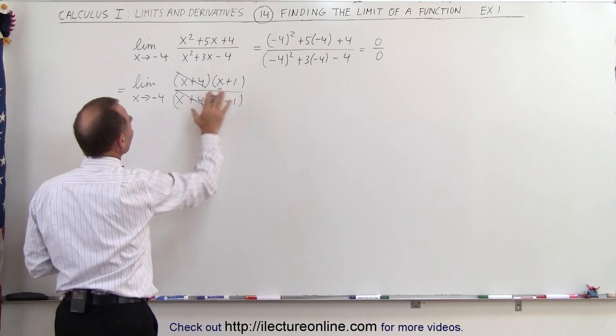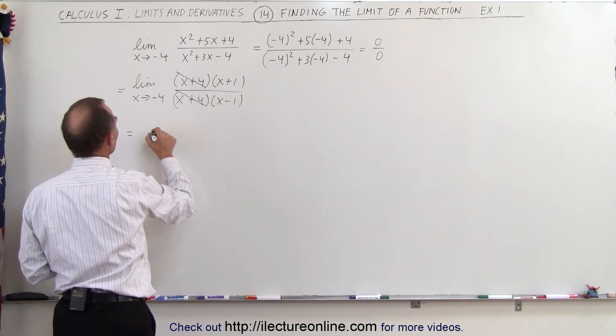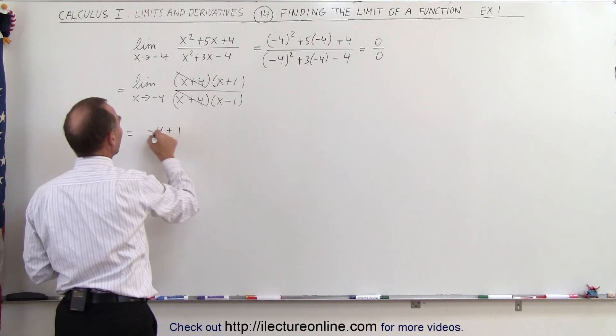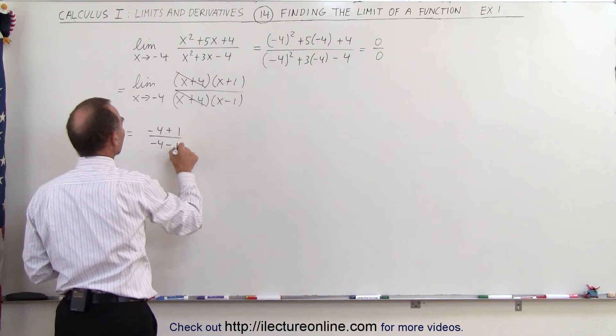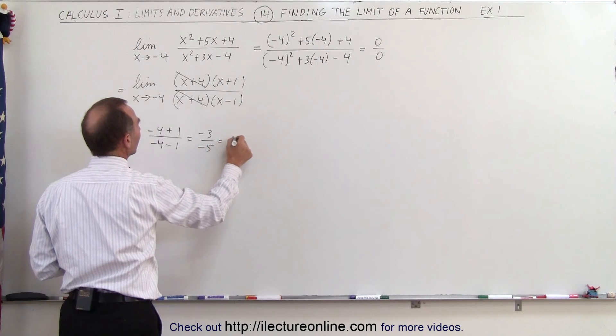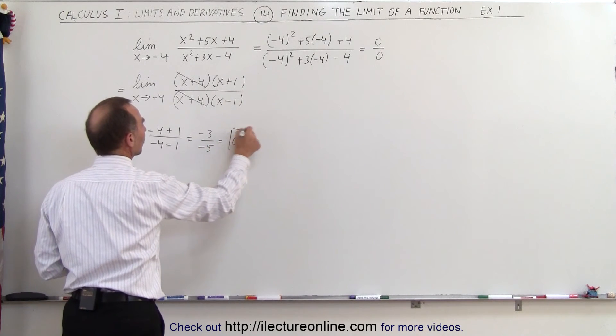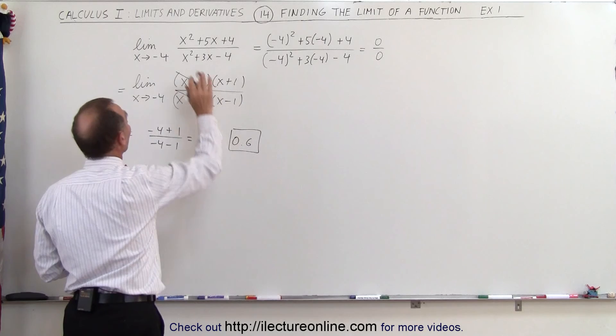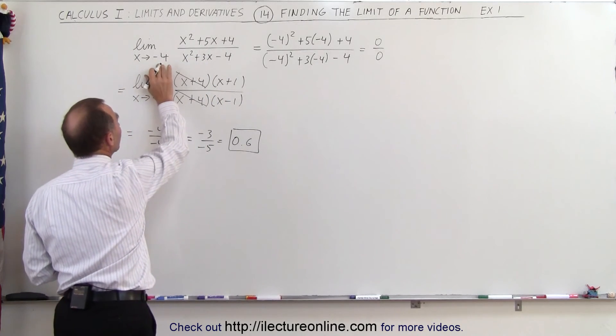Now we can go ahead and plug in the limit. This is equal to (-4 + 1) divided by (-4 - 1), which equals -3 divided by -5, which equals 0.6. So 0.6 is the limit of this function as x approaches -4.